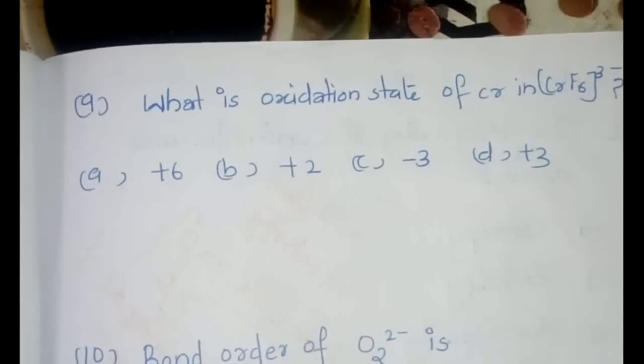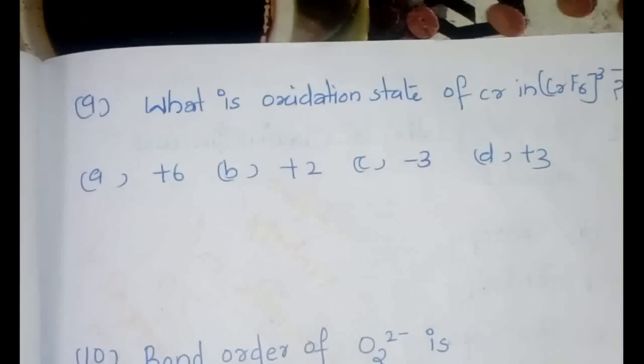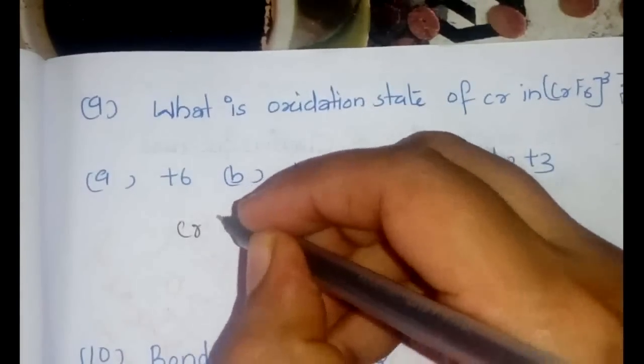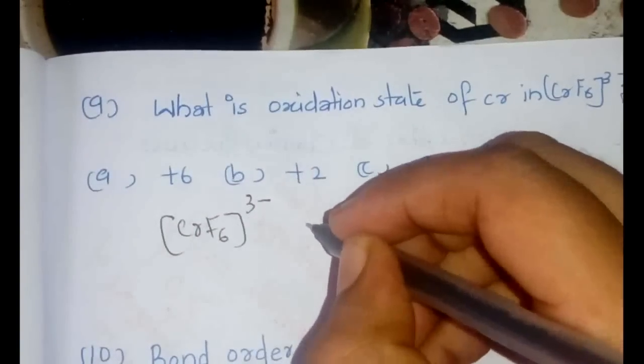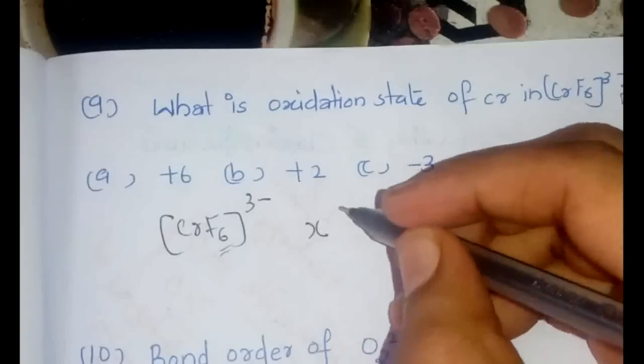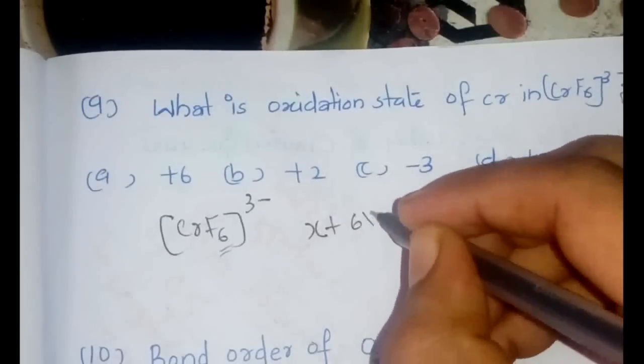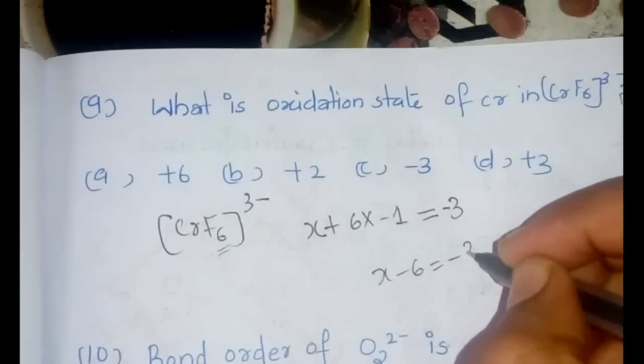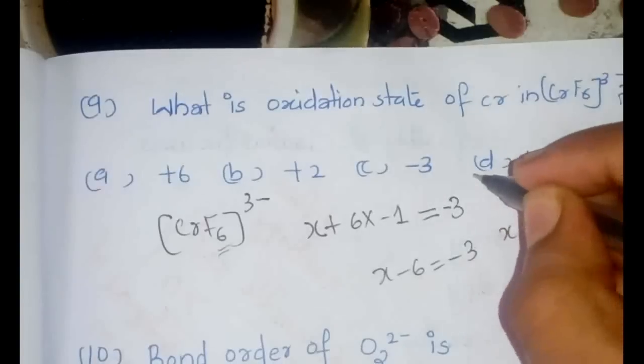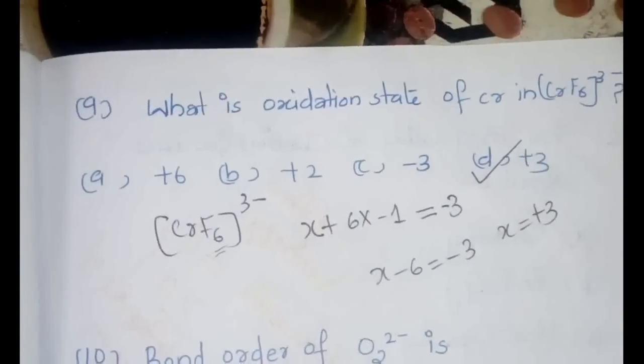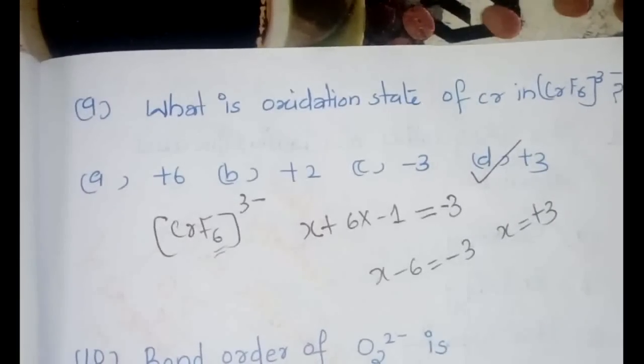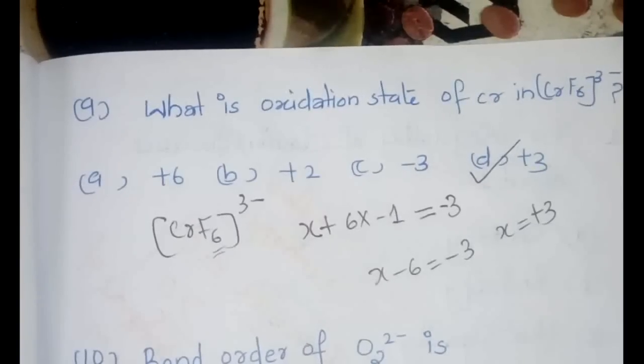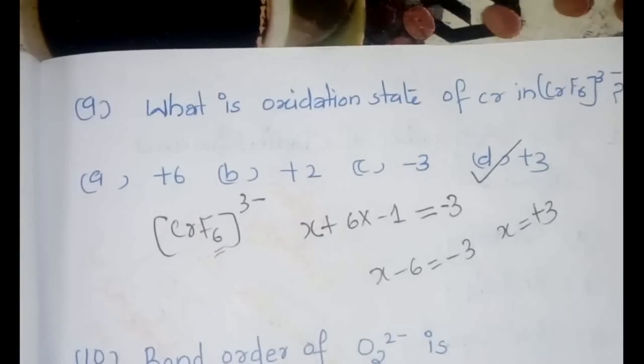This is a very simple question from the part of coordination complexes. The oxidation state of the central metal atom is asked here. Let's consider CrF6 3 minus. Let the oxidation state of chromium be X. Then X plus 6 into minus 1 will be having the charge of minus 3. So X minus 6 is equal to minus 3 or X is equal to plus 3. Even though it is a very simple question can give you a lot of marks and even one mark can give you a difference of 10 or 15 ranks in your examination.